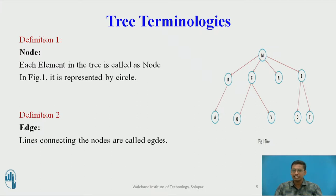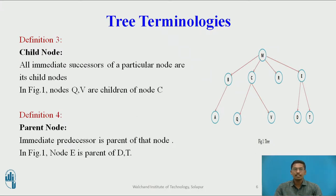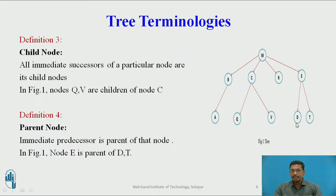An edge is a line connecting two nodes, generally represented by arrows. Next, a child node: all immediate successors of a particular node are called child nodes. In figure one, nodes Q and V are child nodes of node C, and nodes D and T are child nodes of node E. Next, a parent node: the immediate predecessor is the parent node.